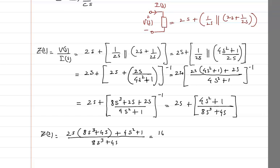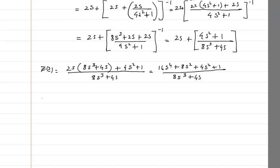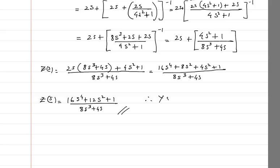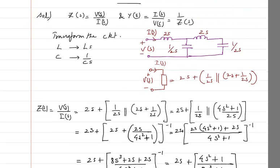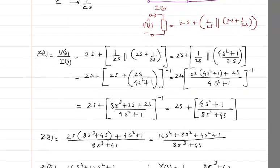So this is the impedance Z(s) = (16s⁴ + 12s² + 1) / (8s³ + 4s), and I will get the admittance Y(s) as 1 by Z(s), which is equal to (8s³ + 4s) divided by (16s⁴ + 12s² + 1). So that is the problem we are doing for today. Based on this, you have to do the worksheet for a similar kind of problem. Thank you.